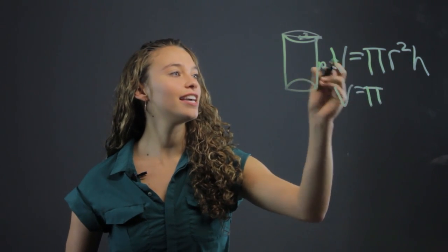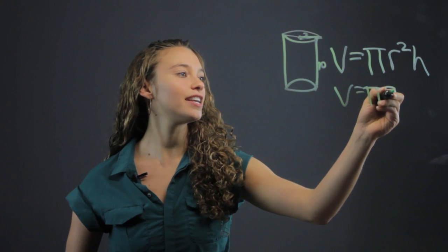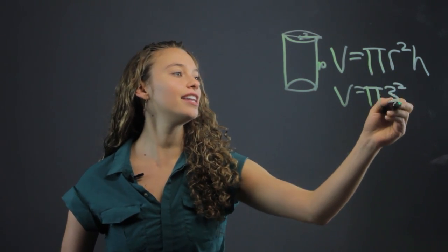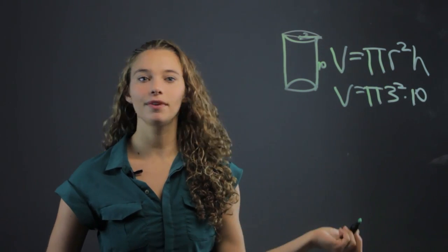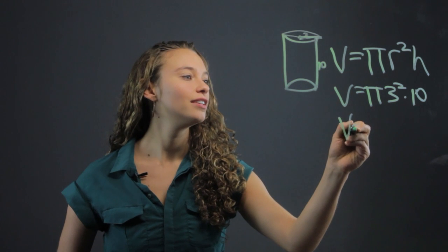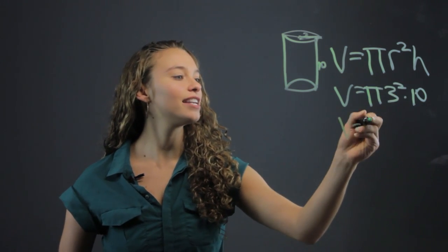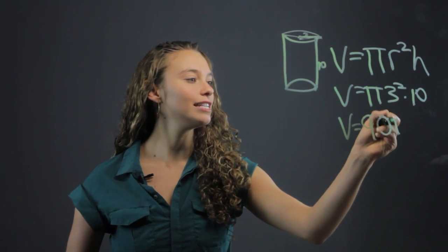Well you just plug in, you know the radius is three squared, the height is ten. Multiply it all together. Three squared is nine times ten is ninety. You get ninety pi.